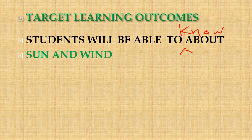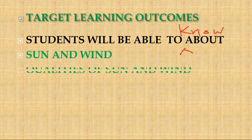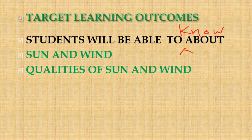Sun aapko pata hai — jo akash mein chamakta hai, sooraj. Wind aapko pata hai — tej-tej behti hai, jab hame achhi lagti hai, jab hawa pasine aare hote hai — hawa, wind. Next: qualities of sun and wind. Sooraj ki aur hawa ki kya-kya qualities hain? Sooraj bahut teji se chamakta hai, bahut garmi ho jaati hai. Wind jab tej chalti hai toh thand ho jaati hai.